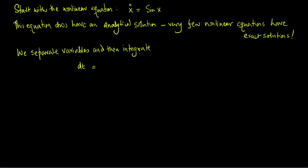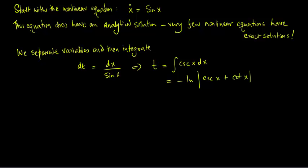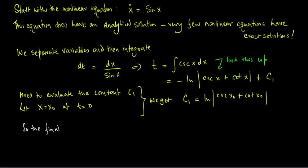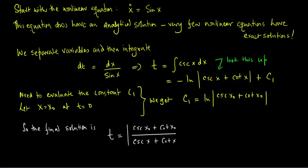Separating variables gives dt is equal to dx divided by sin x, which gives us t is equal to the integral of cosecant of x dx. Evaluating this integral, we get minus log of cosecant of x plus the cotangent of x plus a constant. We suggest you look this integral up. Letting x equal x naught at t equal to 0, we get c1 is equal to log of cosecant of x naught plus cotangent of x naught. The final solution turns out to be t equal to log of the quantity cosecant of x naught plus cotangent of x naught divided by cosecant of x plus cotangent of x.